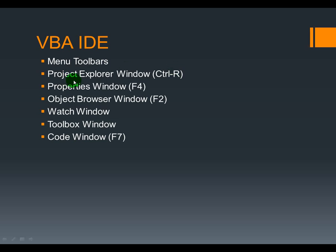We are going to explore the Project Explorer window, where we can work on different projects from within the AutoCAD IDE. We are also going to explore the Properties window, where you can see all the properties, methods, or events of different controls from within your user forms.